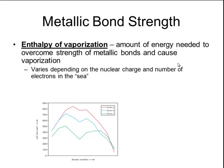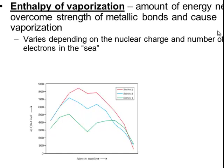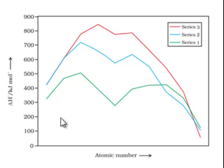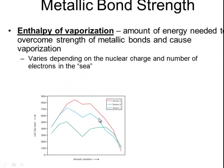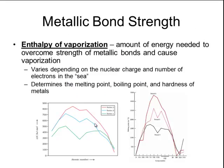The amount of energy varies depending on the nuclear charge and the number of electrons in the sea. In this graph at the bottom of the page, the enthalpy of vaporization for the transition metals are shown. The green line represents period 4 on the periodic table, the blue line represents period 5, and the red line represents period 6. This enthalpy of vaporization is directly related to the melting points, boiling points, and hardness of various metals.